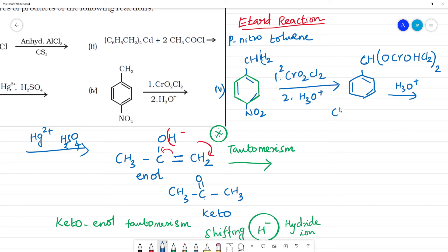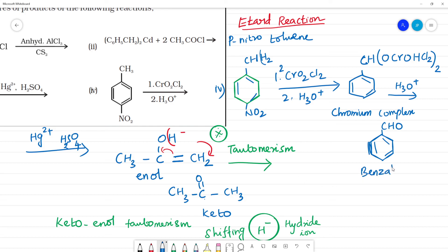This intermediate is a chromium complex. After the next step — acid hydrolysis with H3O⁺ — we obtain the aldehyde product: benzaldehyde (with the NO2 group on the ring). After hydrolysis of the chromium complex, the final product is para-nitrobenzaldehyde. So this is your answer.